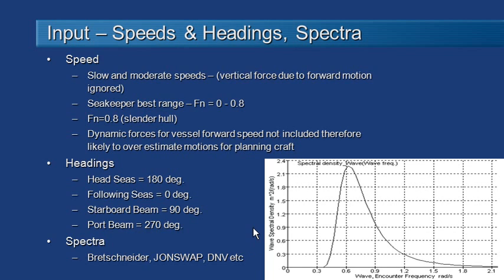Then for the actual vessel calculations themselves, of course, we need to know how fast the vessel is going because that affects motions. So we can enter in the range of speeds. SeaKeeper works best in a range of Froude number from zero to 0.8. So for slender vessels, you can go up to the higher end of the range around 0.8. For squatter vessels, you probably wouldn't want to go quite that high. But note that SeaKeeper doesn't actually calculate the dynamic motions effects due to forward speed. So you need to be careful with planing craft.